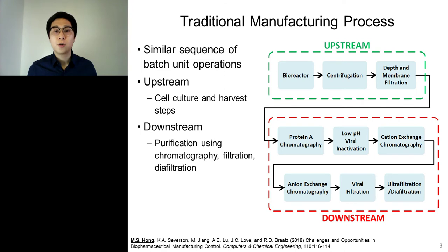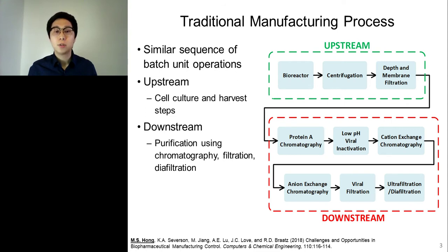Traditional biopharmaceutical manufacturing consists of a similar sequence of batch unit operations divided into upstream and downstream. For example, the figure in the slide shows a process flow diagram for a typical platform used for producing monoclonal antibodies. The upstream unit operations include cell culture with a series of batch bioreactors and harvest steps, which are centrifugation and filtration. The downstream consists of purification with multiple steps of chromatography, filtration, and diafiltration.